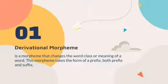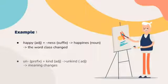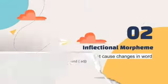The derivational morpheme is a morpheme that changes word class or word meaning. This morpheme is in the form of an affix, either prefix or suffix. For example, you can see in this video.